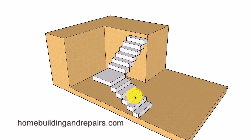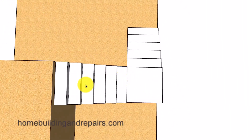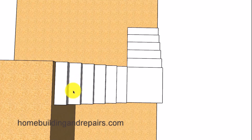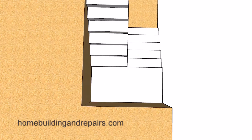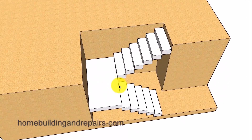Instead of going straight up, you could have a stairway that goes off to the right or to the left. This is commonly referred to as an L-shaped stairway with a landing, and this stairway can also have a landing located anywhere within it — one, two, or three steps from the top, or four or five steps from the bottom. Another common design is the U-shaped stairway or switchback, which is another common configuration for stairs with landings.